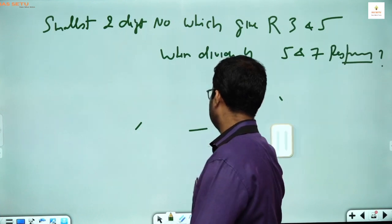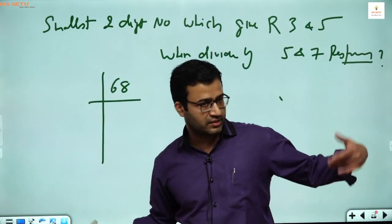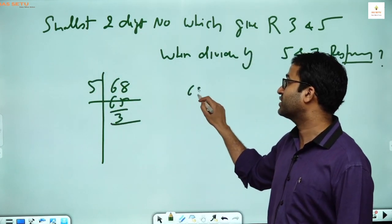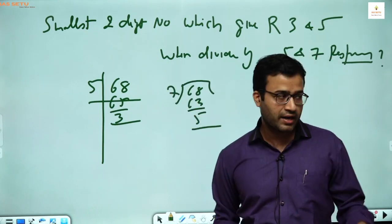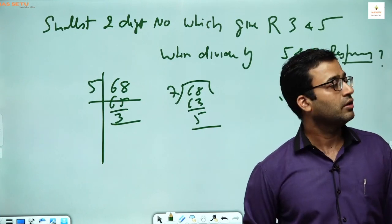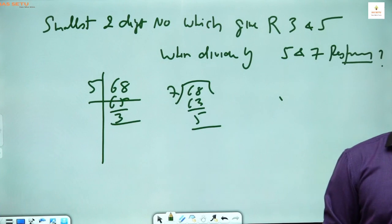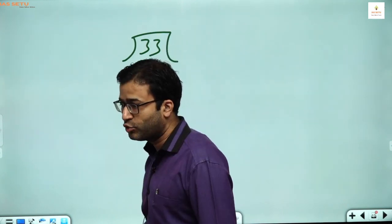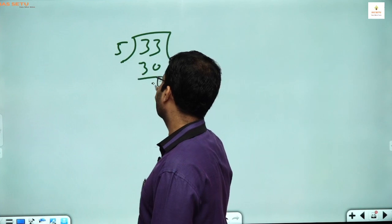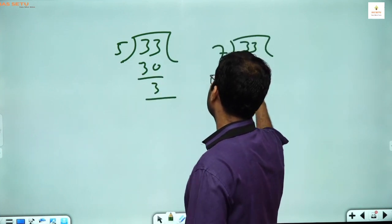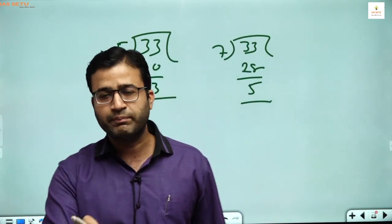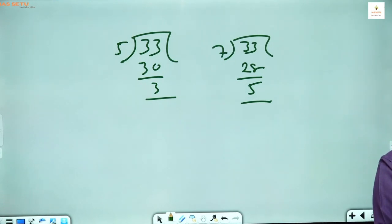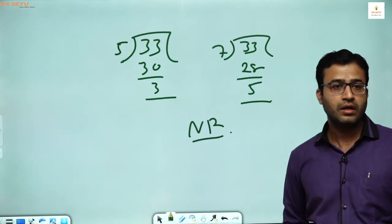She gave one answer — it is correct, so on Women's Day I'll give extra marks. But it's not the smallest. When you divide 68 by 5 remainder is 3, when 68 is divided by 7 you get remainder 5 — agreed, but there is a smaller number before that. 33 is the correct answer. 33 is the smallest 2-digit number. Here there is a concept — what is the concept? Negative remainder.